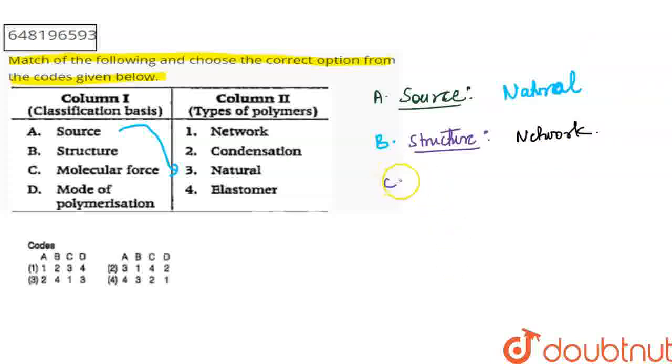Next, we have molecular forces. So on the basis of molecular forces, we have polymers. We have different polymers like elastomers, fibers, thermoplastic polymers, and thermosetting polymers. So what do we have? Elastomers.